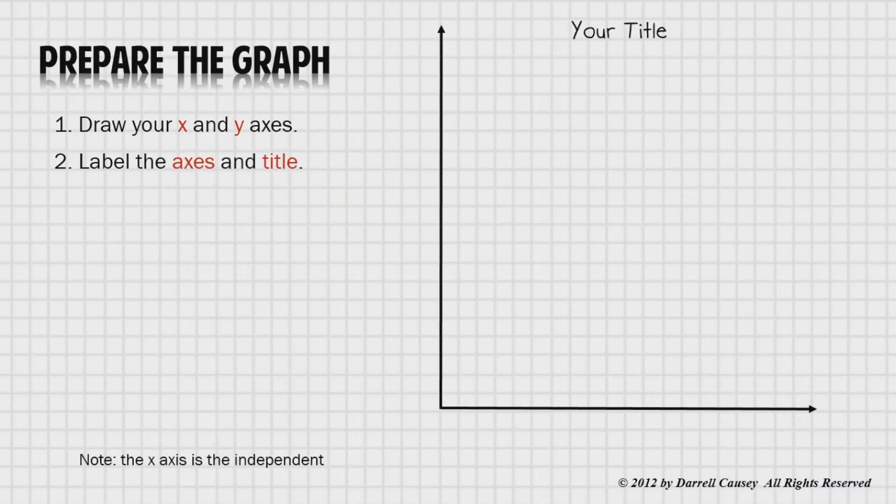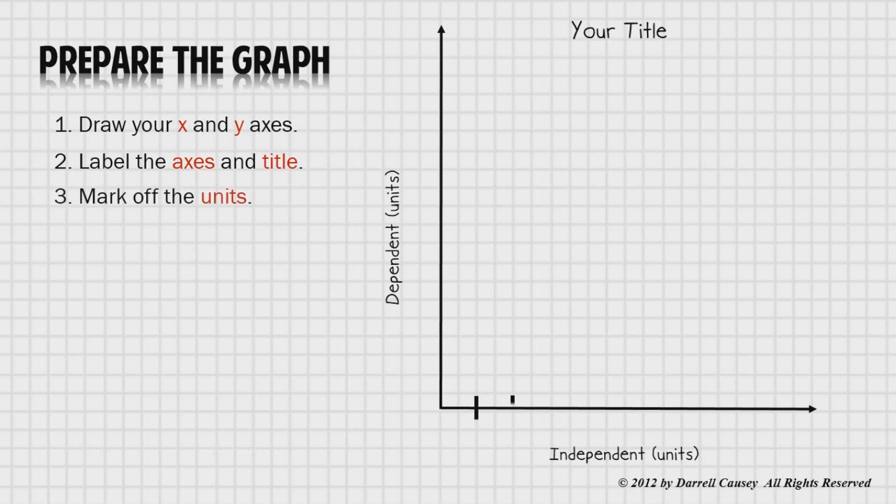So let's look at how to prepare a graph. Draw your x and y-axis and then label the axis with your title, your independent and your dependent, and your units. Always remember the independent goes on the x-axis. Mark off the units, make them nice and neat, and be sure to spread them out so you have a nice big graph. Graphs should be nice, clean, and on graph paper.